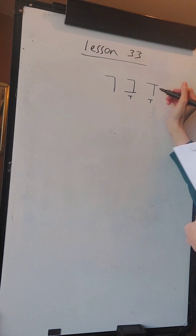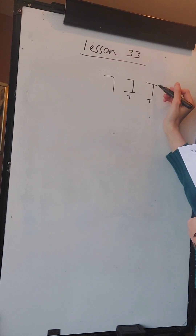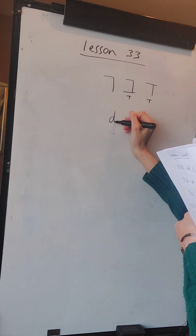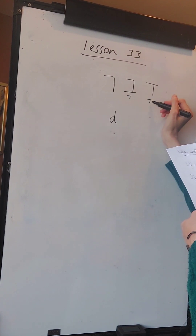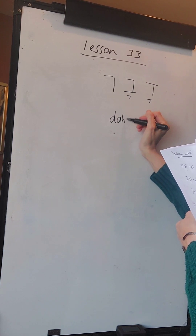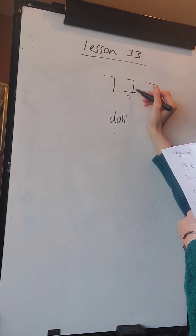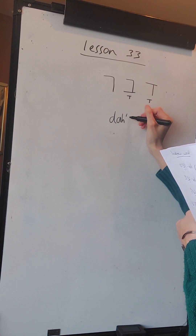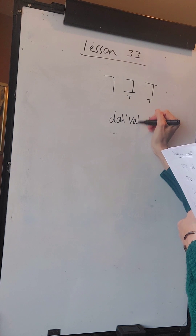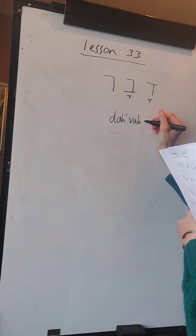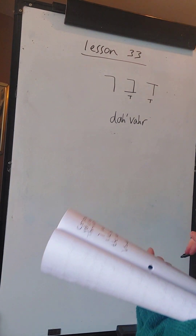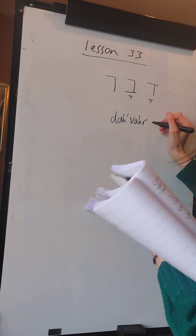The first Hebrew consonant is the Dalet, which sounds as D. The little T shape is the A vowel - DA. Vet sounds as VA again with the A vowel. And the Resh at the end - DAVAR, which means thing.